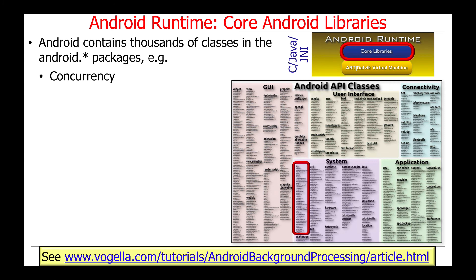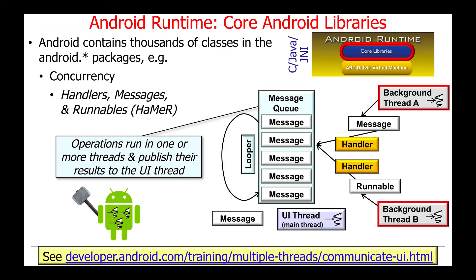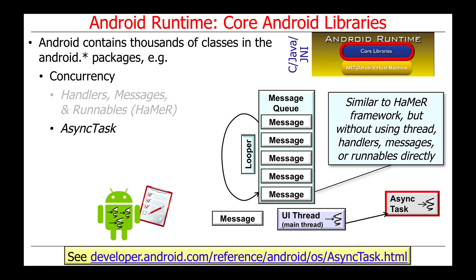Some of the more interesting classes available in the Android packages include their concurrency mechanisms. One is called Handlers, Messages, and Runnables — the HAMR framework — where operations can run in one or more background threads and then publish results to the user interface thread. There's also the AsyncTask framework, which is similar to HAMR but allows concurrency to run without directly programming threads, handlers, messages, or runnables. These are hidden by an object-oriented framework veneer using patterns like the template method pattern, the facade pattern, and the half-sync/half-async pattern, reducing the complexity of concurrent programming in Android.